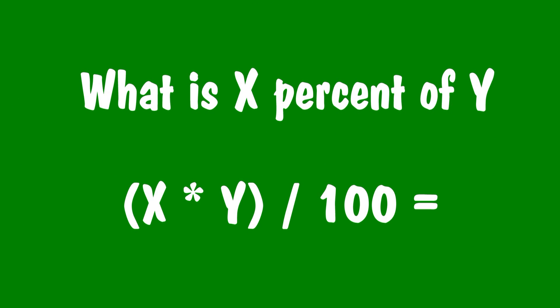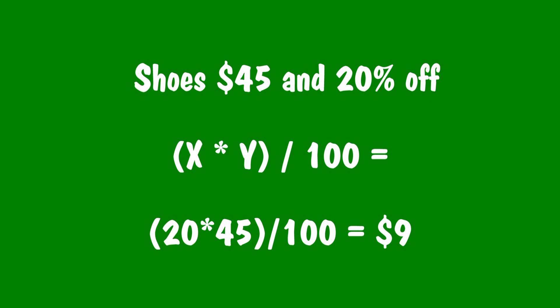Hello, so for our first lesson here, we have a question. What is x% of y? For example, the shoes you have been dreaming about are $45 and they're on sale at 20% off. So how much do you save? The formula here is x times y divided by 100. In this case, x is 20 and y is 45. So what you have to do is times 20 times 45 and divide that by 100. And if you do the math, you'll save $9.